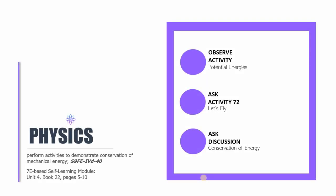Hello and welcome to the 34th session of Physics 9. This is Sir CJ. In this session we are going to be tackling the following parts: the first part is a simple activity on the potential energies under Observe; the second part under Ask is Activity Number 72 titled 'Let's Fly'; and the last part under Ask is a discussion about the conservation of energy. All of these are found in the 7E-based Self-Learning Module in Science 9, Unit 4, Book Number 22, pages 5 to 10. The learning competency we are mastering in this video lesson is as follows.